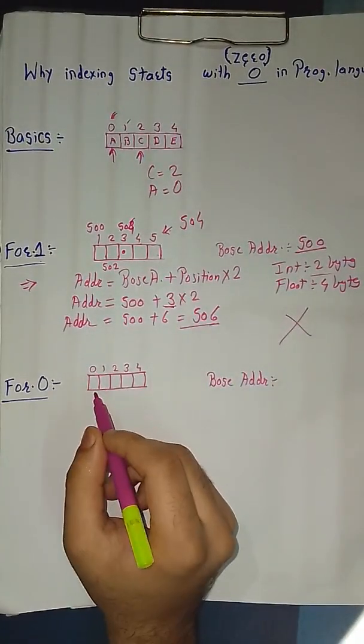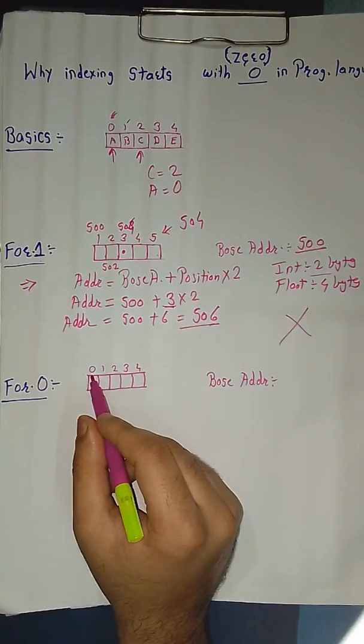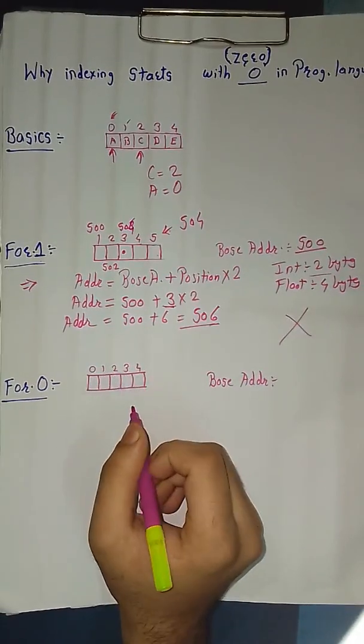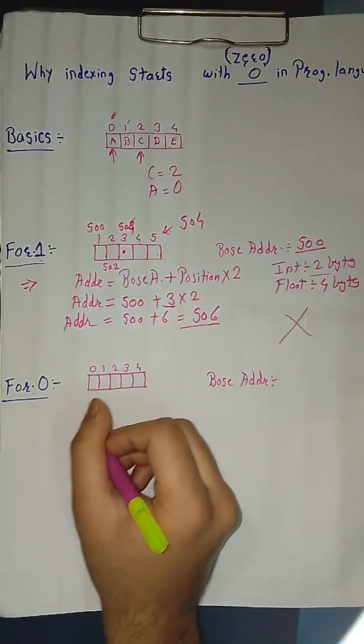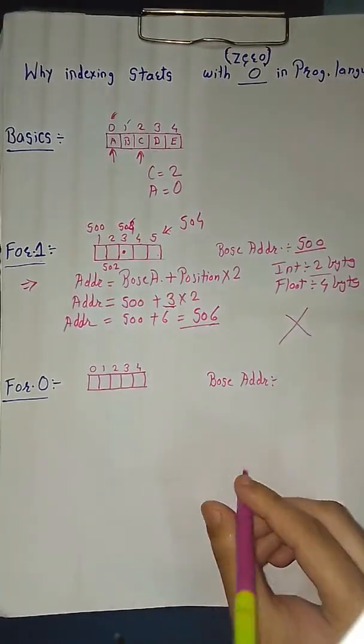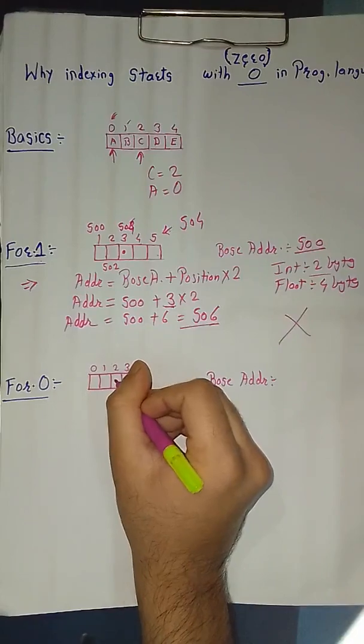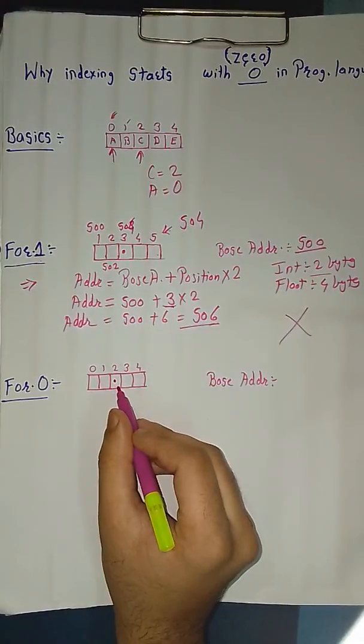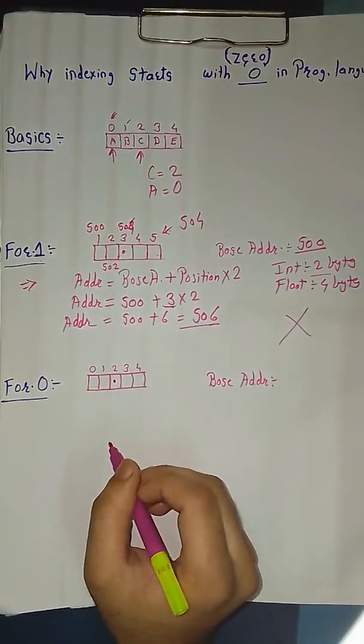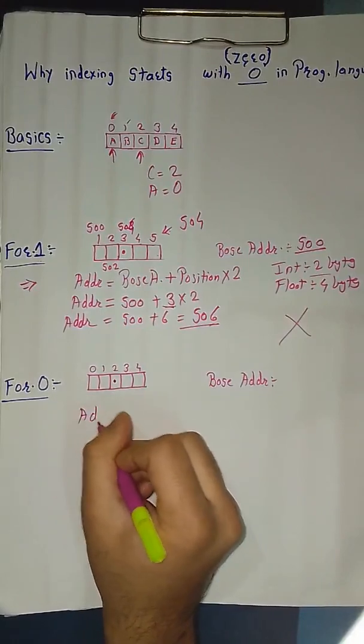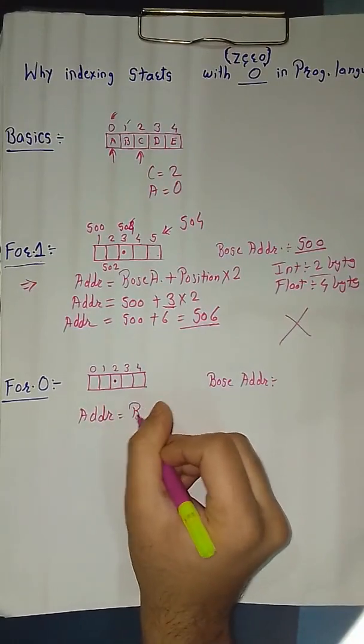Let's move on to indexing starting from 0 method. Here we have got the indexes as 0, 1, 2, 3, 4. Let's do the calculation here also. In that case, we will find the element at, suppose we have taken the second, so we have to find the element at the second position.